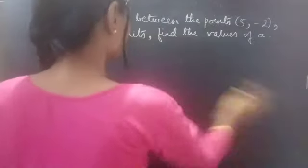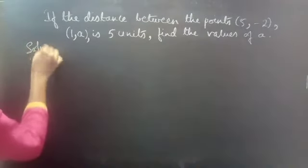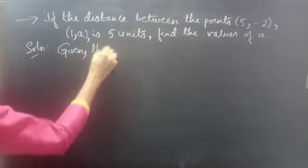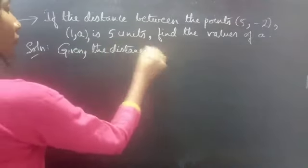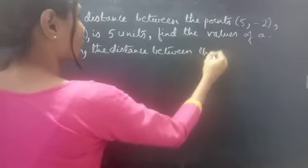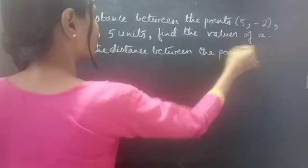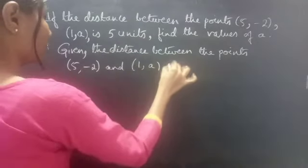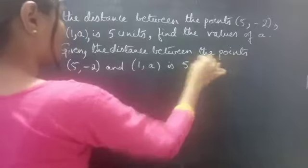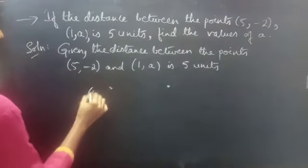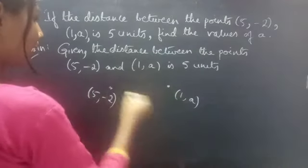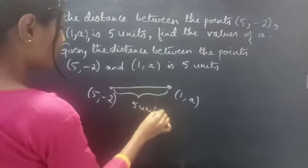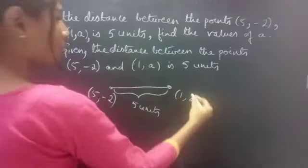Solution. Given that the distance between the points (5, -2) and (1, a) is 5 units. Consider 2 points: (5, -2) and (1, a). The distance between these 2 points is 5 units. Here we are asked to find the values of a.